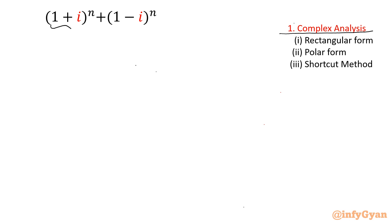1 plus i or 1 minus i — right now you can see it is in rectangular form or Cartesian form. We will convert it, and since the power is n, De Moivre's theorem will come into the picture. That's why polar form is required. We will also see the shortcut method.